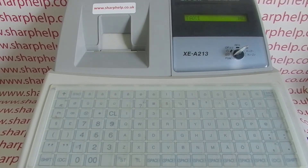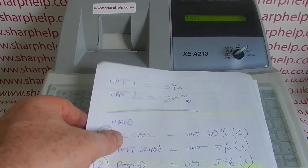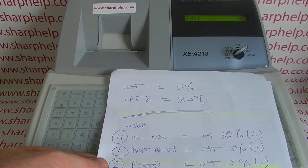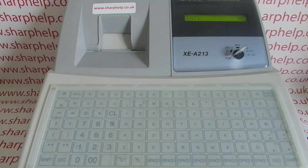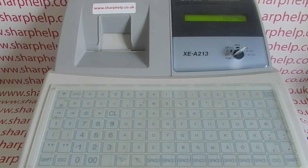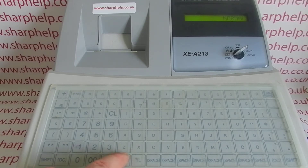Now this is the crucial bit. This is department 11, my alcohol department. I've set rate 1 to 5% and rate 2 to 20%, and alcohol sales are currently at 20%, so I've got to make sure I'm on tax rate 2. Tax 1 set to no is correct, so I hit subtotal. Tax 2 is set to yes, which is correct. Tax 3 should be no, tax 4 should be no. Register type is positive or negative — it should be normal, not single item cash sale — so press subtotal, positive is correct.